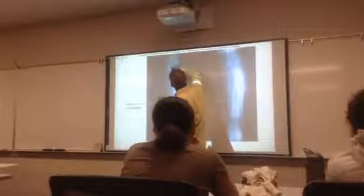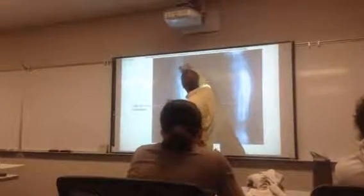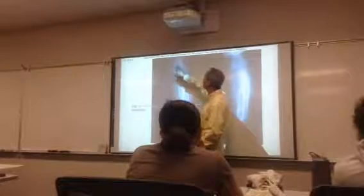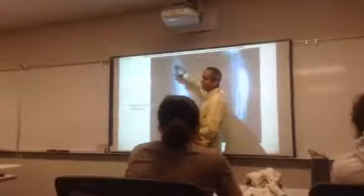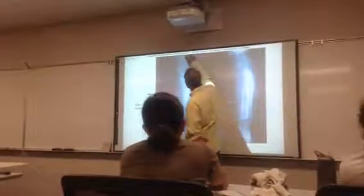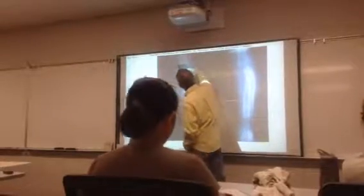Notice the bone densities here. This area is not as dense because this is bone marrow — this is spongy bone, or cancellous bone. And this over here is going to be cortical bone.